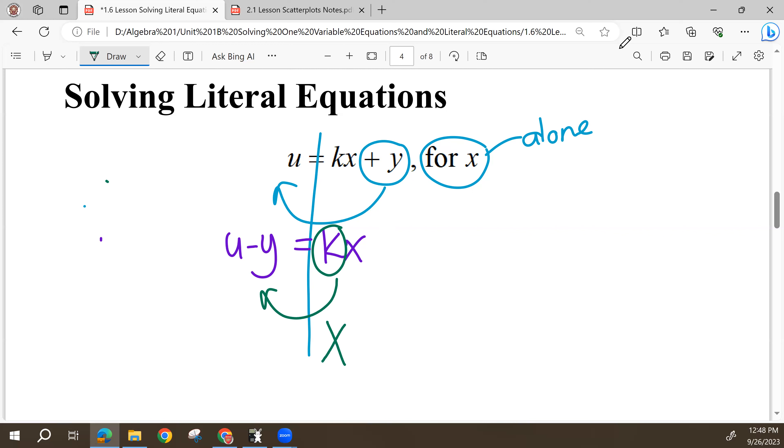So what I end up with is U minus Y with a big fraction bar or a big division bar, and then K is below it, dividing that whole side of the equation. And now I have solved for X. I've got X alone, and that is my final answer.